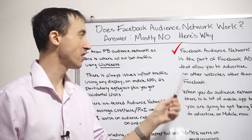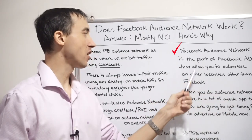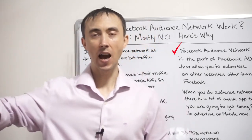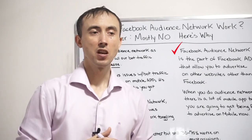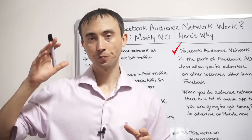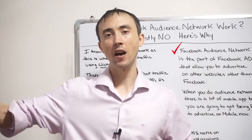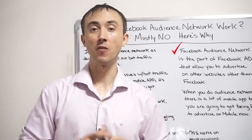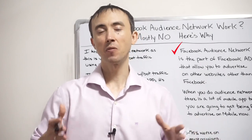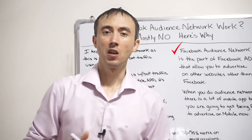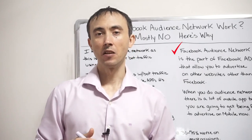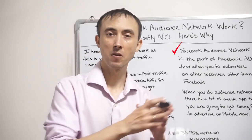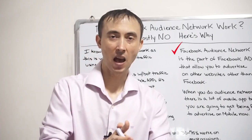Facebook Audience Network is a part of the Facebook Ads platform that allows you to advertise on other websites other than Facebook. Facebook makes a deal with other website owners, app owners, or app publishers to get the people who use Facebook — they're already aware of when they're on one of these other websites — to have an ad show up for them on those other websites. And whatever you pay to get on those other websites, Facebook keeps half the money.